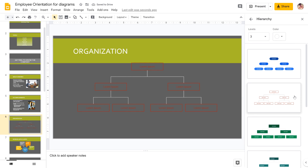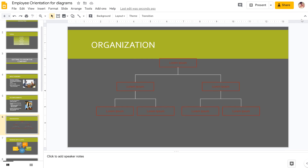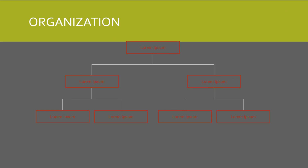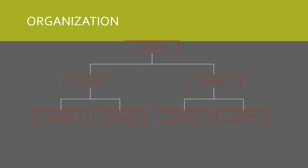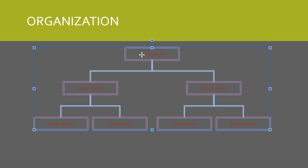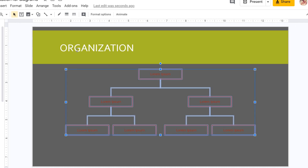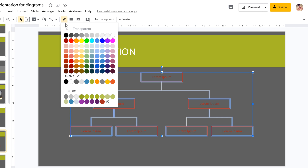Now let's make some changes so that the diagram better matches the rest of the presentation. You can close the diagram pane to give yourself more room to work. To edit different parts of the diagram, you first have to select them, and this is not always as easy as it sounds. To select the whole diagram, click an empty spot on the slide and drag a box around all of the elements. You can now move the whole diagram by clicking and dragging one of the elements. You can also change the color — the red is hard to see, so let's choose something else. With everything still selected, go to Border Color and choose the color that you want.